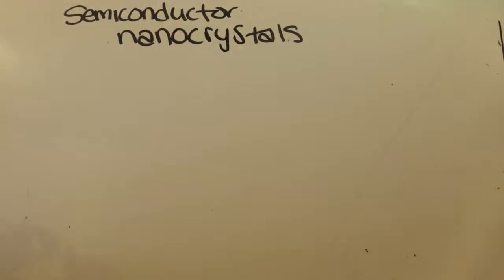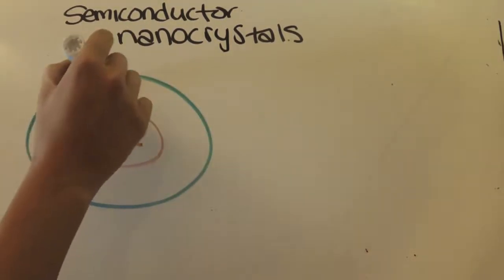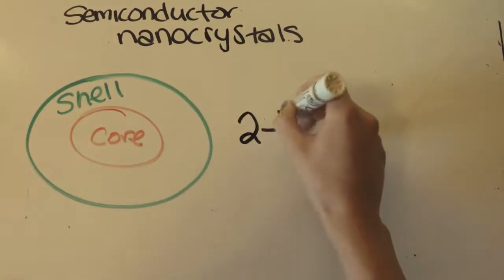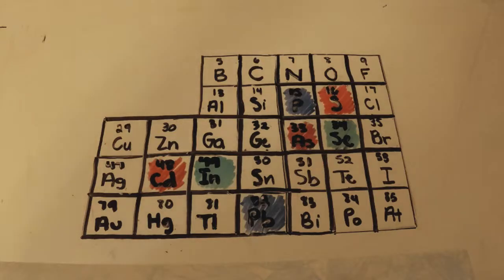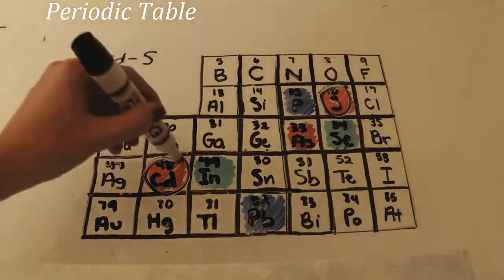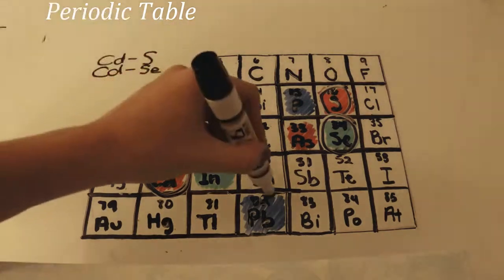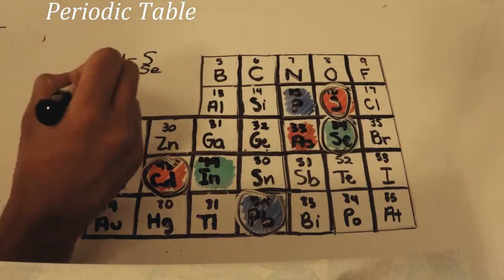By using quantum dots, we are able to get better images in televisions, energy-efficient solar cells, and groundbreaking advances in medicine. The quantum dot is comprised of a core and a shell. The core is composed of elements from groups 2 to 6 on the periodic table, such as cadmium sulfide and cadmium selenide.